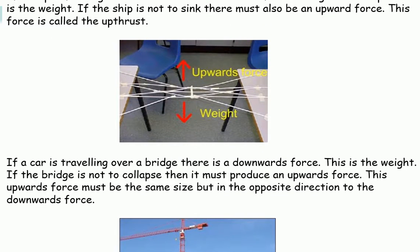If a car is travelling over a bridge, there is a downwards force. This is the weight. If the bridge is not to collapse, then it must produce an upwards force. This upwards force must be the same size but in the opposite direction to the downwards force.